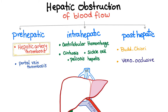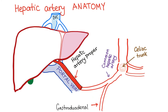Post-hepatic causes also include veno-occlusive disease. Now let's review some anatomy. Here we have the abdominal aorta; the celiac trunk gives three branches: the left gastric artery, splenic artery, and common hepatic artery. The common hepatic artery further subdivides into the gastroduodenal artery and the hepatic artery proper, which goes into the liver and gives two branches — left and right — to the left lobe and right lobe respectively.